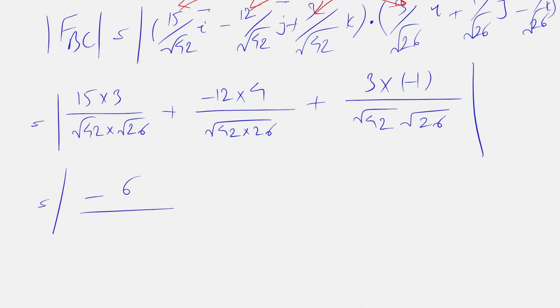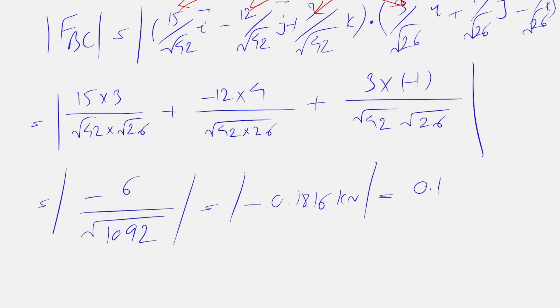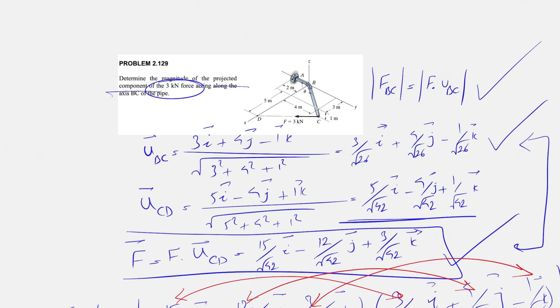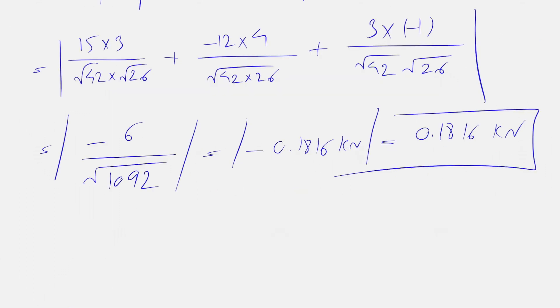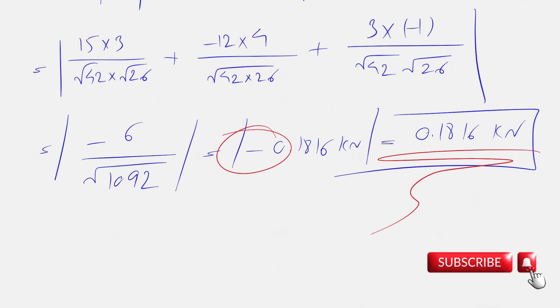Evaluating this, we get −6 over √1092, which gives us −18.16 kilonewtons. The magnitude is therefore 18.16 kN. The negative sign indicates that the projected component is in the opposite direction of U_BC — the projection is in the opposite direction of BC — but the question simply asks for the magnitude, which is 18.16 kN.